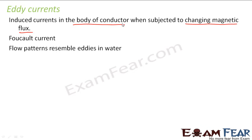You would have seen eddies — they are like small ripple patterns in water, like when you throw a stone. Eddy currents also look like that pattern, which is why they are called eddy currents. Since these currents were first observed by a scientist named Foucault, they are also called Foucault currents.